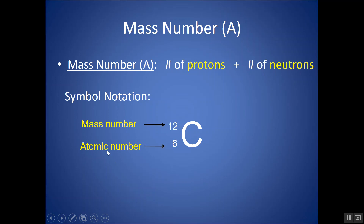We can show the mass number and atomic number in a nuclear symbol — sometimes called isotopic notation or nuclear symbol. You put the element symbol, for example C for carbon or N for nitrogen. The atomic number goes in the bottom left-hand corner, and the mass number goes in the top left-hand corner. This is a set notation that scientists can all agree upon.